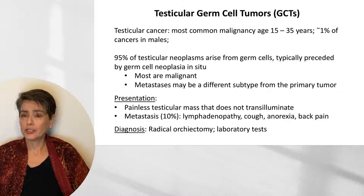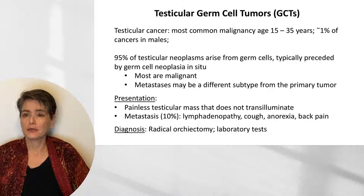As you recall, in situ malignancy can be seen in almost all organ systems, such as ductal carcinoma in situ of the breast and squamous cell carcinoma in situ of the cervix. One thing to keep in mind is that even though we're going to be subtyping these various germ cell tumors, metastatic foci may be a different subtype from the primary tumor.